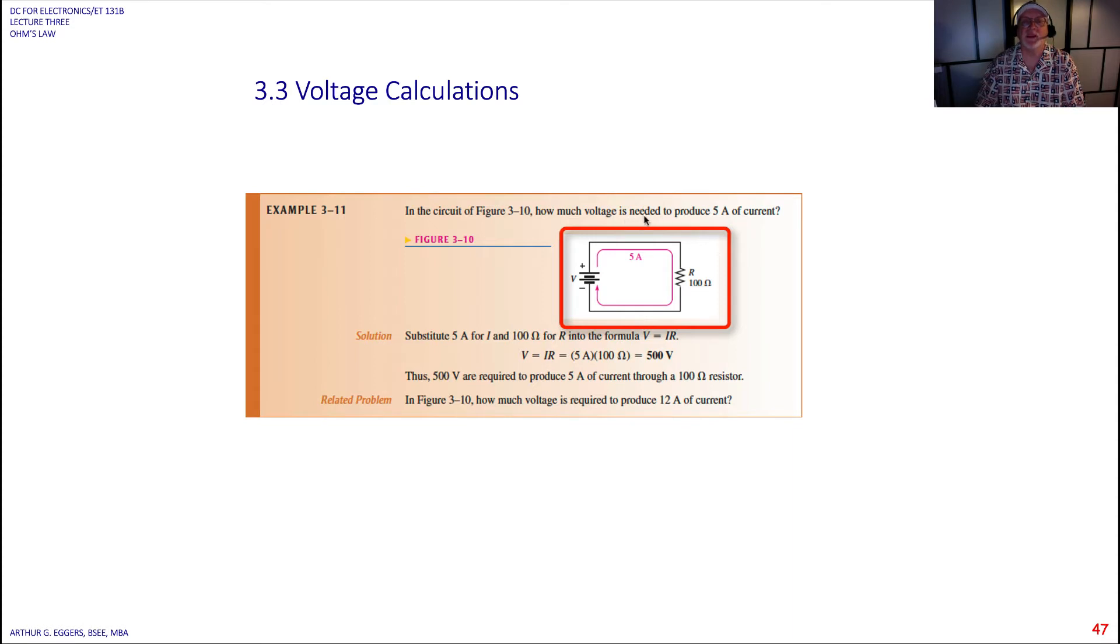So how much voltage is needed to produce 5 amps in the current? So you notice how that's worded. How much voltage is needed to produce 5 amps of current? I don't know what the voltage is but I know that I'm going to need a source that can push 5 amps of current through a 100 ohm resistor.